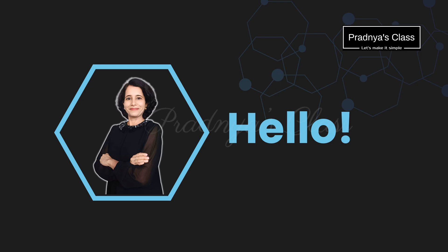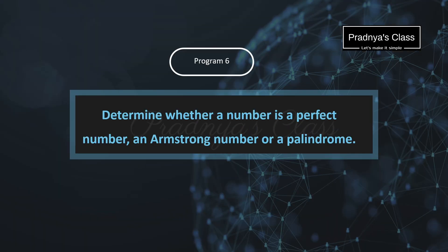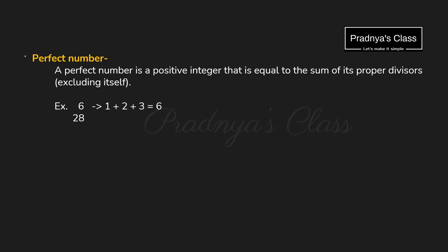Hey everybody, hope you are doing good. This is the playlist in which we write the programs from the Python practical list. In this video, we are going to write the Python program which will check whether the number is a perfect number, an Armstrong number, or a palindrome. Let's start with the perfect number.